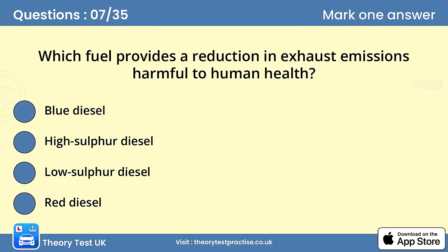Question 7. Which fuel provides a reduction in exhaust emissions harmful to human health? The answer is C: Low sulfur diesel. Low sulfur diesel reduces the levels of sulfur dioxide particles in exhaust emissions. It's widely available and makes a contribution to reducing emissions that are harmful to human health.